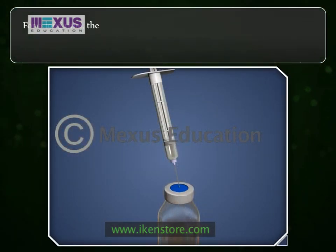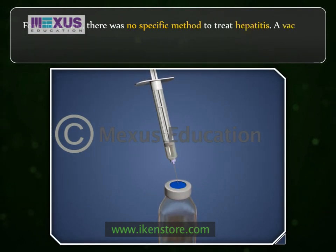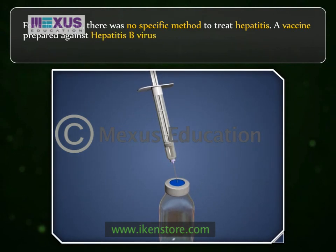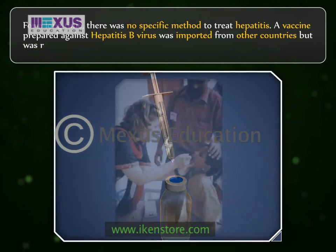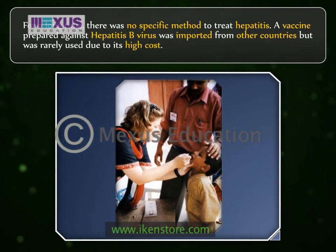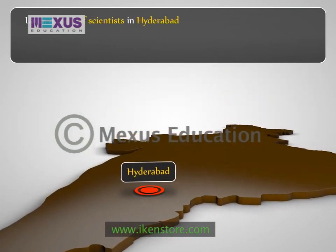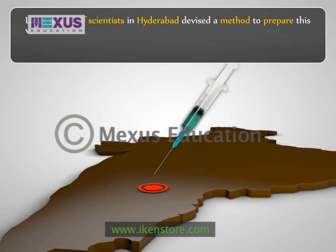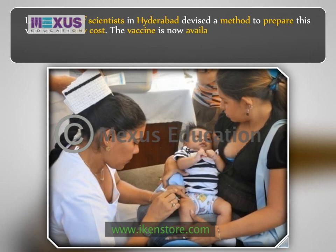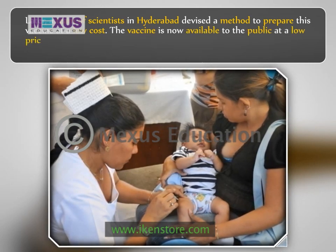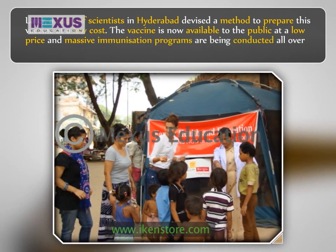For a long time, there was no specific method to treat hepatitis. A vaccine against the hepatitis B virus was imported from other countries but was rarely used due to its high cost. Later, a team of scientists in Hyderabad devised a method to prepare this vaccine at a low cost. The vaccine is now available to the public at a low price and massive immunization programs are being conducted all over the state.